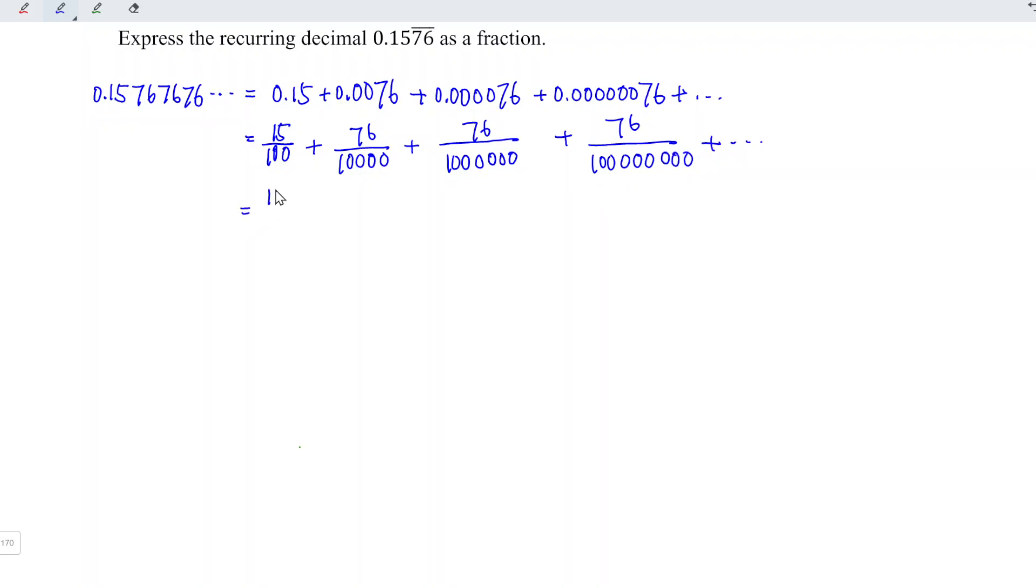This equals 15 over 100, and the following series is simply a geometric progression with A equal to 76 over 10,000 and R, the ratio, which is the second term divided by the first term. We obtain 1 over 100.